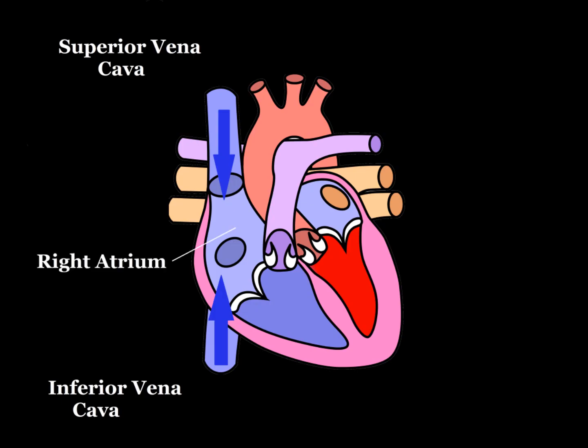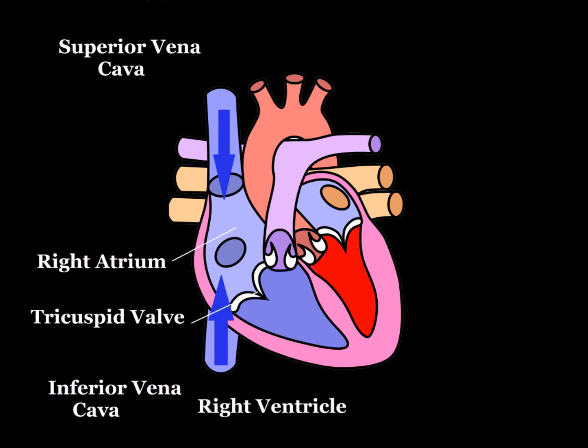After the right atrium is filled with blood it contracts, which opens the tricuspid valve. Blood flows from the right atrium through the tricuspid valve and into the right ventricle.